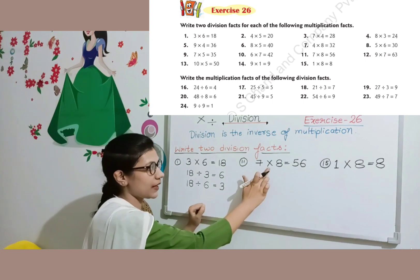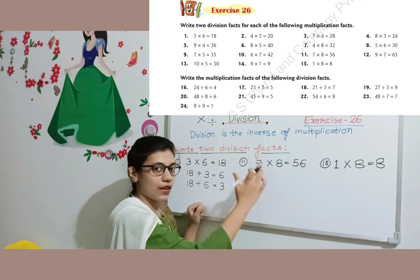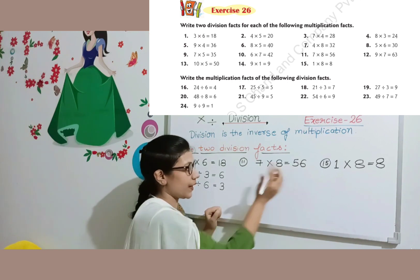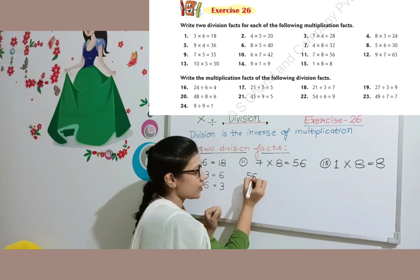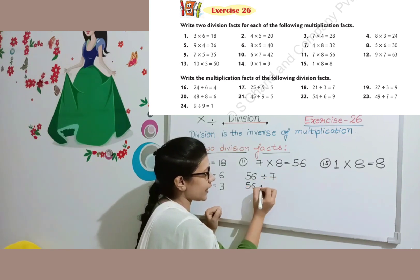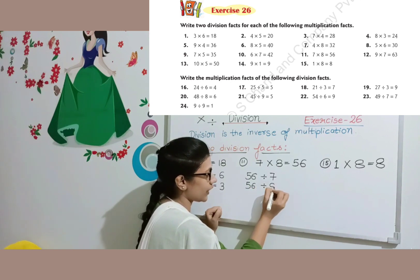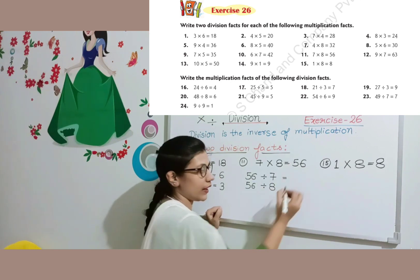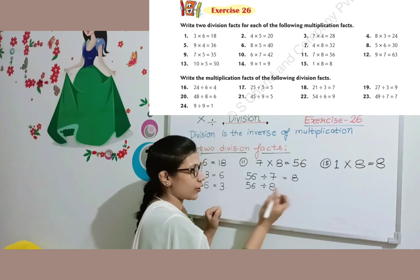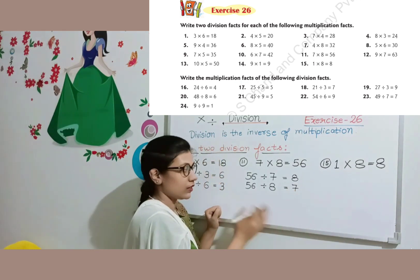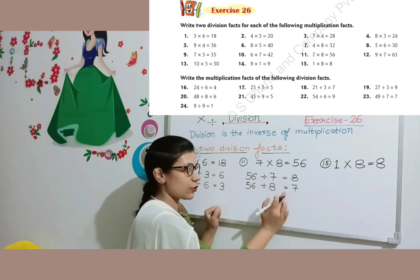Question number 11: 7 multiplied by 8 is equal to 56. We know 7 eights are 56 and 8 sevens are 56 due to the order property of multiplication. So we divide the biggest number, 56. First division fact: 56 divided by 7. Second division fact: 56 divided by 8. You must write two facts, not just one.